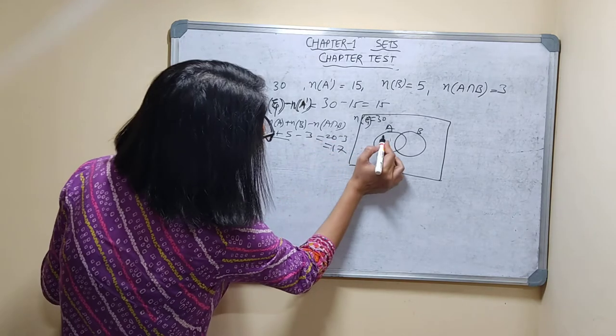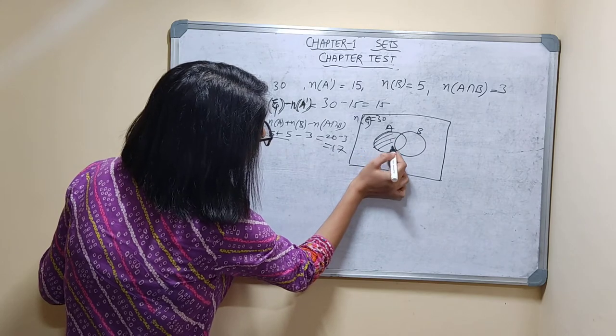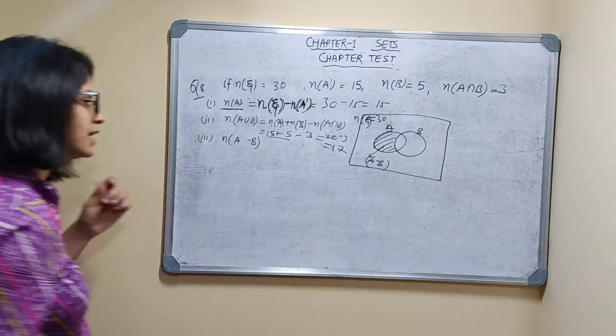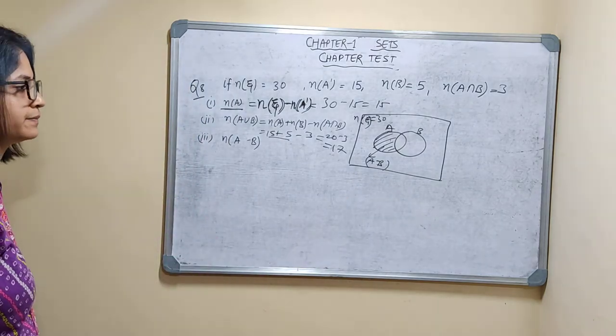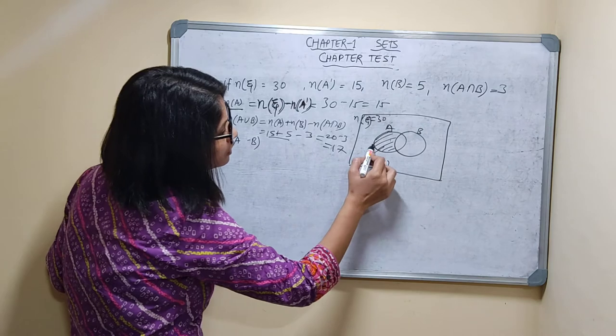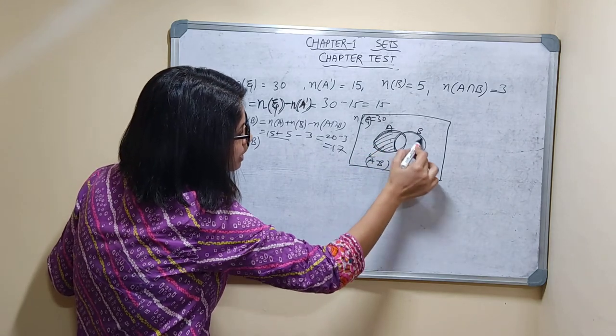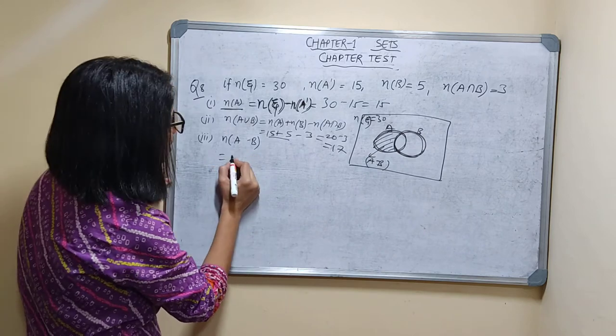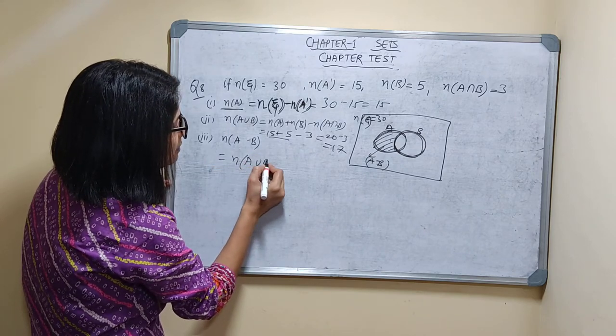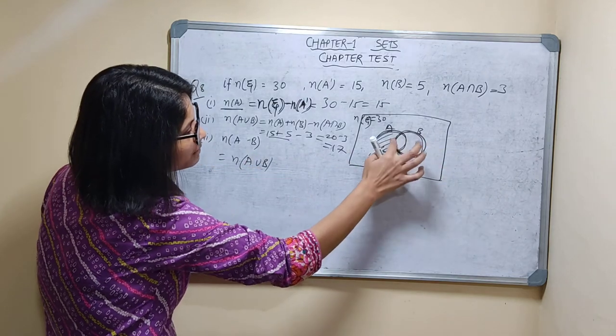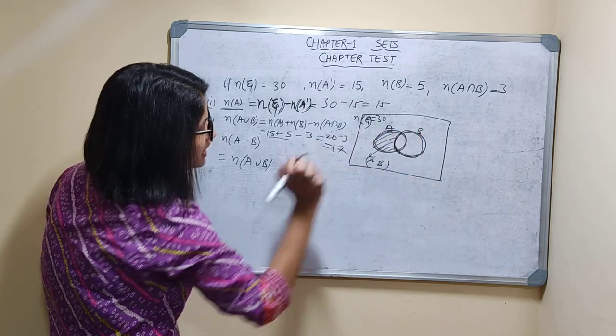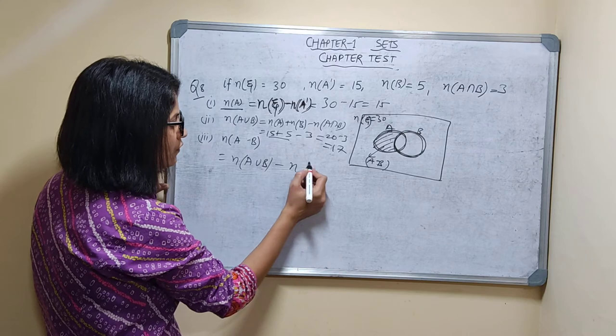N(A-B). This part is A minus B. So, what can I write? I can do n of this full, A∪B minus B. I can write n(A∪B) minus this part. If I remove B, I will get number of elements in A minus B. Minus n(B).